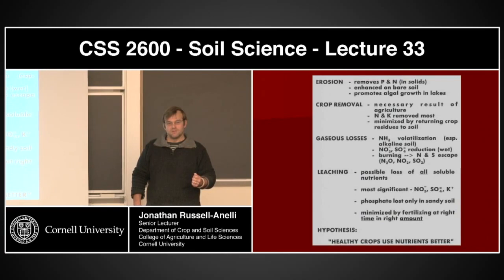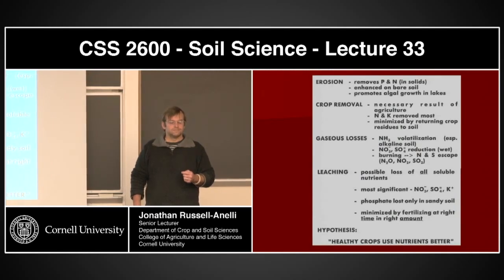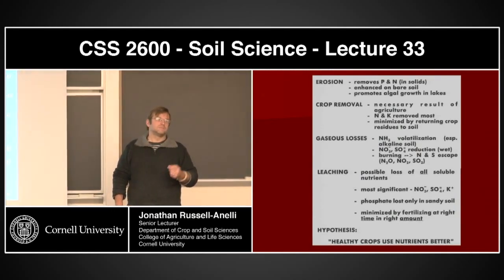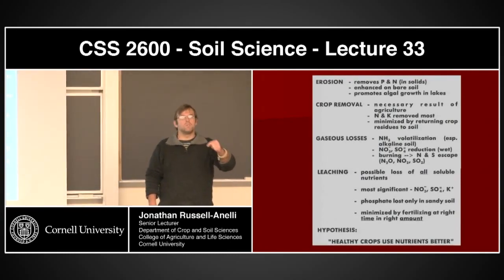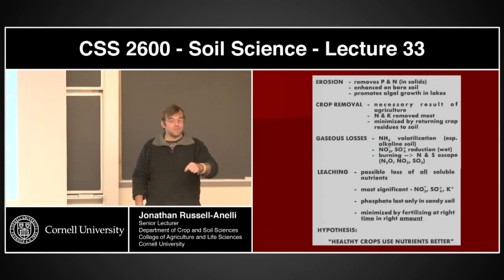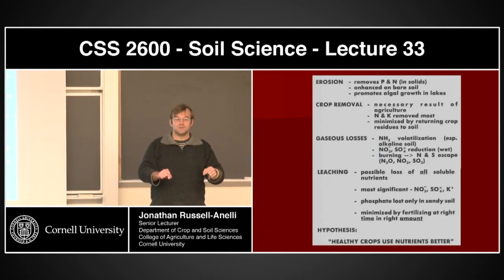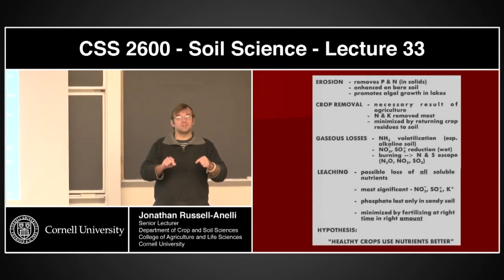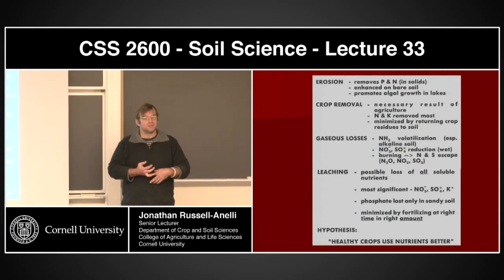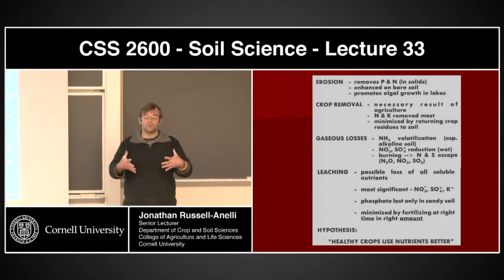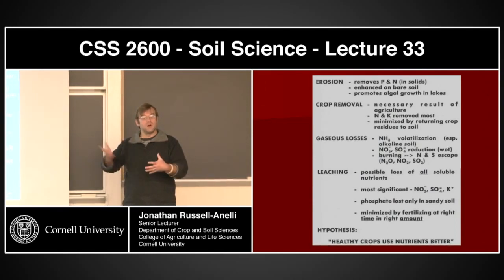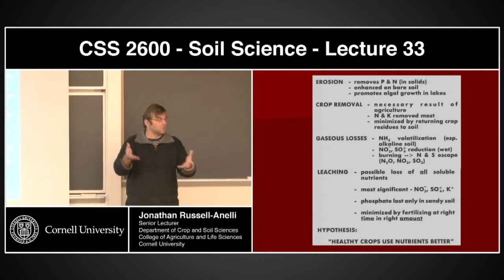Why would healthy versus unhealthy plants make a difference? Well, if they're healthy, they'll be producing more biomass and using more nutrients, so less will be available to be lost. If they're healthy, they're going to be producing more biomass, and if they're producing more biomass they're going to be taking up more nutrients — there's less of it to be lost through volatilization and leaching. More biomass is also going to anchor more of the soil, so I'm going to lose less soil through erosion. I'm going to capture most of it in biomass, and if I put that residue back in the system, it goes into that organic matter pool and right back into the soil.